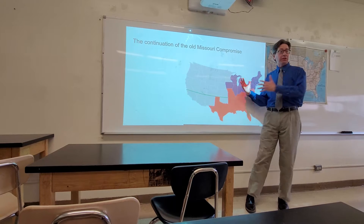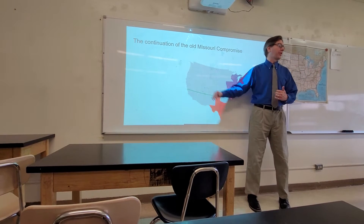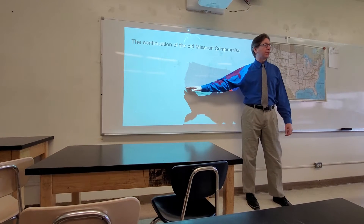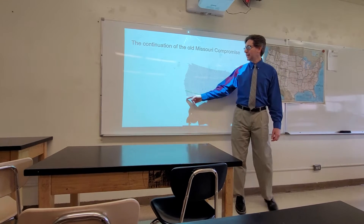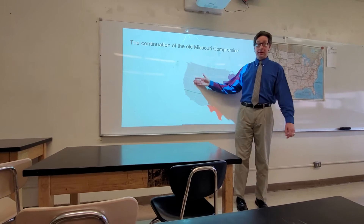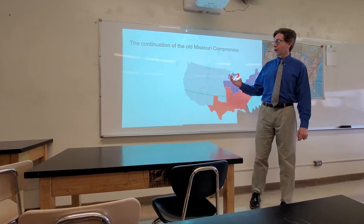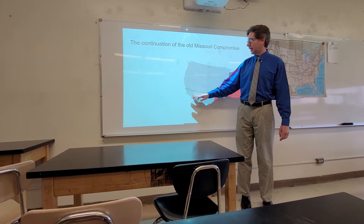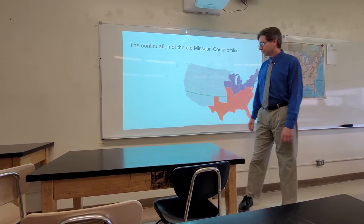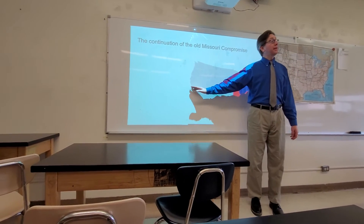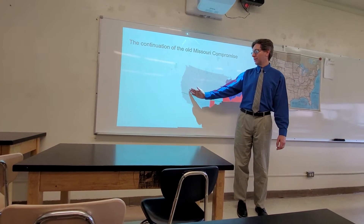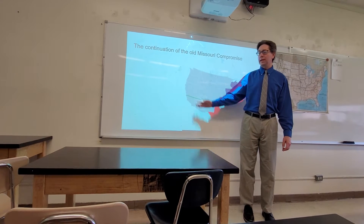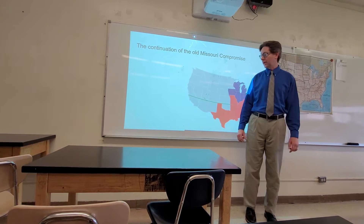Everyone, especially in the Senate — they're back east and don't really understand what's going on out west — initially says okay, this is what we're going to do. But we have a lot of people in California who are starting to gain a California identity, and they really see California as being right here. There is a question as to the eastern border: is it going to extend all the way over the Sierra Nevadas, or is it going to be in the Sierra Nevadas?